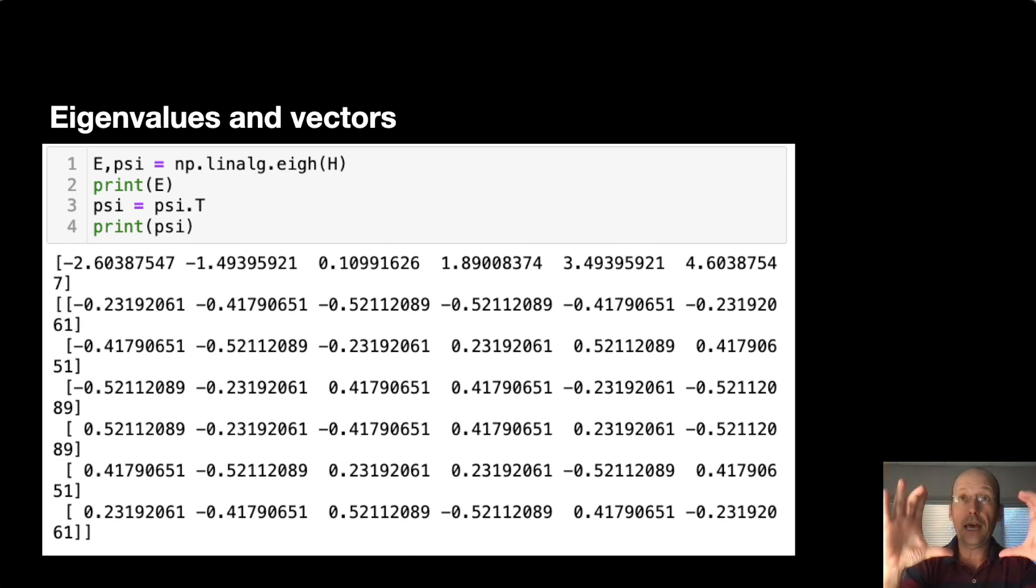There's a problem in that it returns the eigenvectors as rows. But when we reference them, we want them as columns. So do this right here. Psi equals psi dot T. That takes the transpose of the matrix so that you get your solutions the way you want. And this is a 6 by 6. I printed them out. You will have the same number of eigenvectors as the dimensions of your matrix because it's a matrix operation.